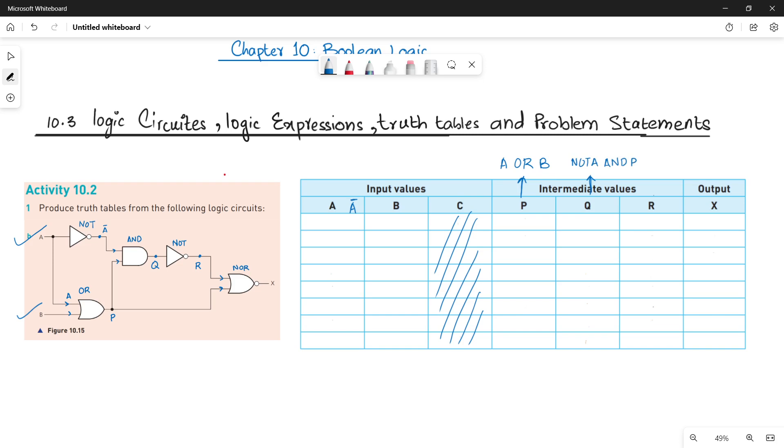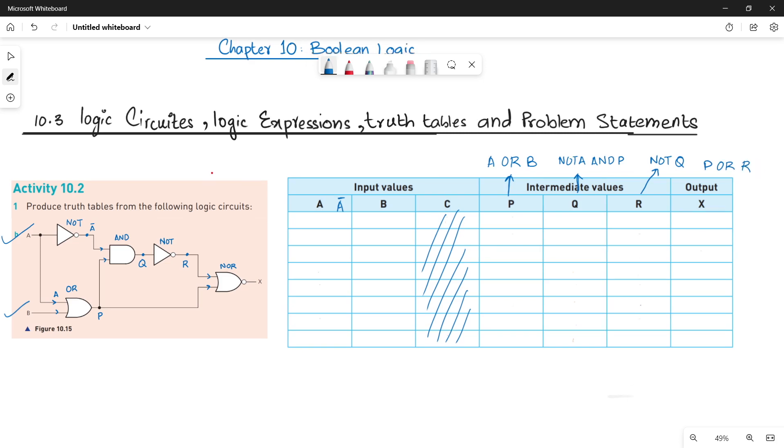This is how you have to calculate Q. Next, we have R. R is nothing but it is NOT Q or Q bar. You have to invert the values of Q. That's it. Because Q is coming through an inverter and giving you R. Next, the final is your NOR gate. NOR gate is taking R and P as input. So you can write down P or R. This is how you have to do the working for your truth table.